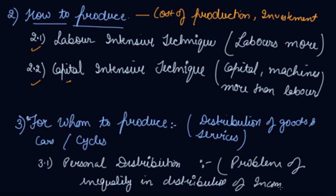The incomes in India are very unequal. Some are very rich, some are very poor, some are middlemen. So for whom to produce, or for whom you are producing? Cars you are producing for rich, cycles you are producing for poor. So this is your personal distribution of resources. The problem here is the inequality of income.